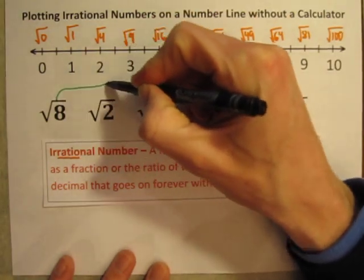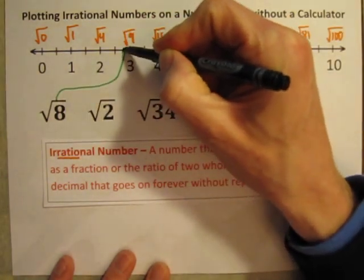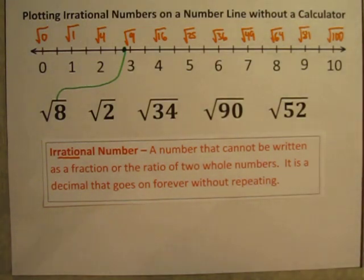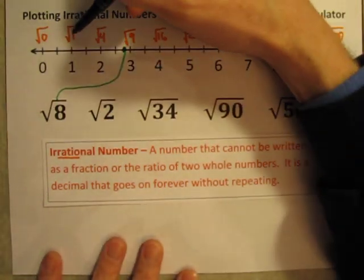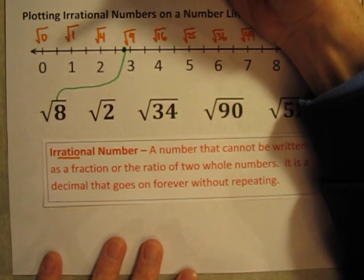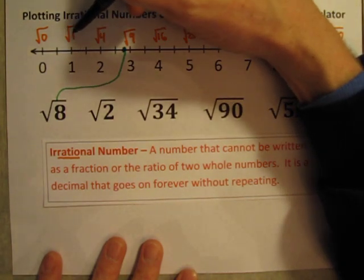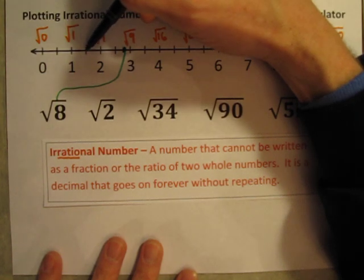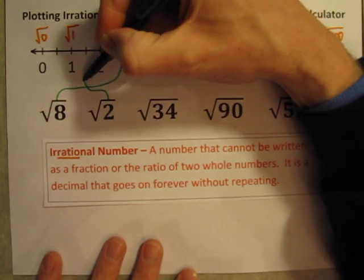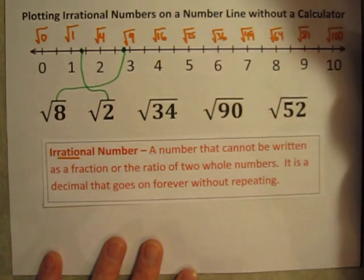So the square root of 8, I'll draw it right about there — a little bit less than three but greater than two and a half. How about the square root of 2? That's another famous irrational number. The square root of 2 is going to be greater than the square root of 1, less than the square root of 4. It's probably closer to the square root of 1, so less than one and a half but greater than one. So the square root of 2 is going to come right about there.